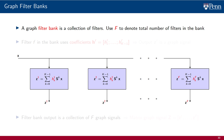A graph filter bank is a collection of graph filters that we apply to an input signal. We use capital F to denote the total number of filters in the bank. We index filters with lowercase f and denote the coefficients of filter f as h sub k superscript f. The output of filter f is the graph signal z with the filter index f noted as a superscript.